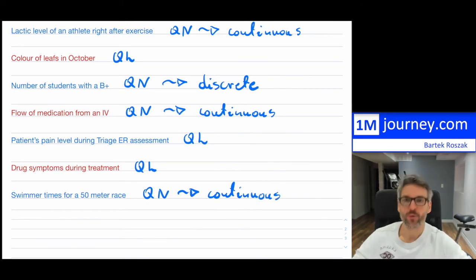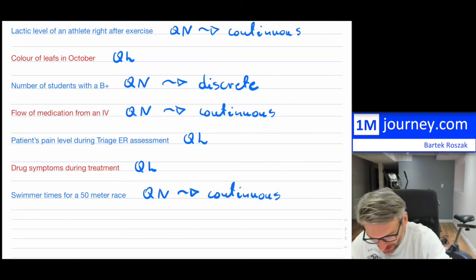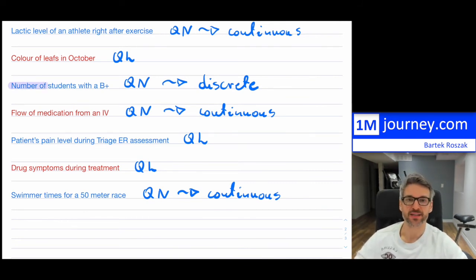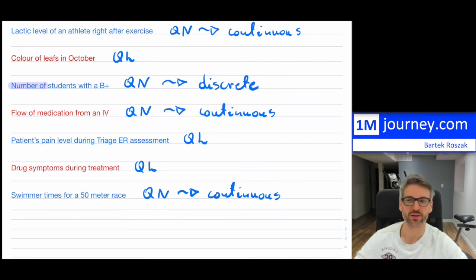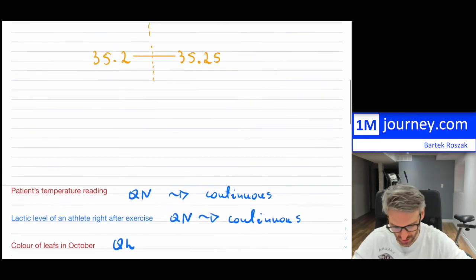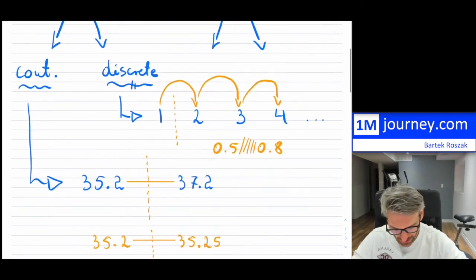Counting something countable — number of students, number of IVs purchased, number of phones in the last 10 years — those are all discrete values. They're just countable. That's the difference between continuous and discrete.